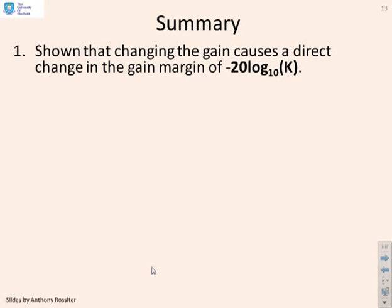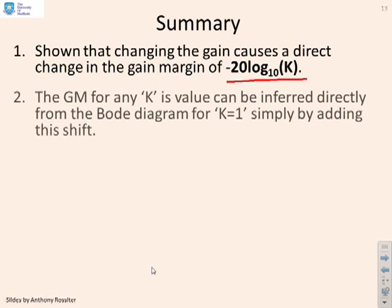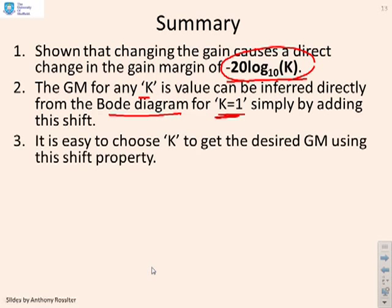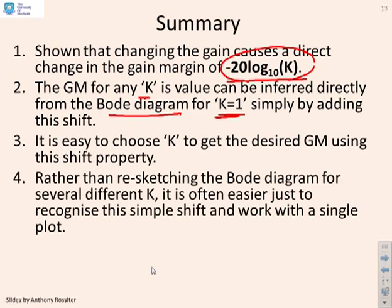So in summary, we've shown that changing the gain causes a direct change in the gain margin of minus 20 log to the base 10 of K. The gain margin for any K can be inferred directly from the Bode diagram for K equals 1. So if you've got the Bode diagram for K equals 1, you can actually, from just using this formula here, get the gain margin for any other K. It's easy to choose K to get the desired gain margin using this shift property. And rather than resketching the Bode diagram for several different K, it's often easier just to recognise that this simple shift and work with a single plot.